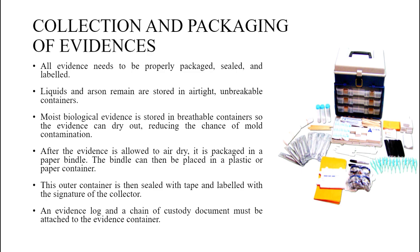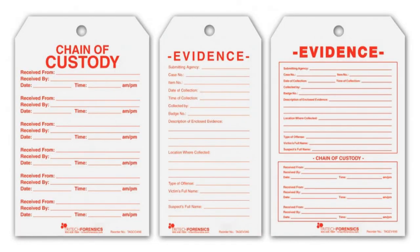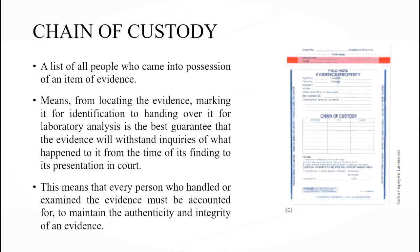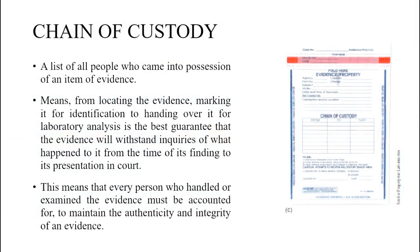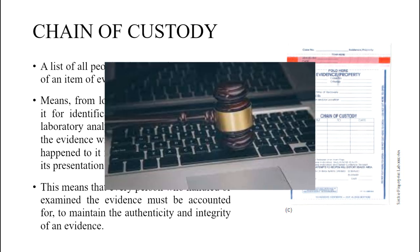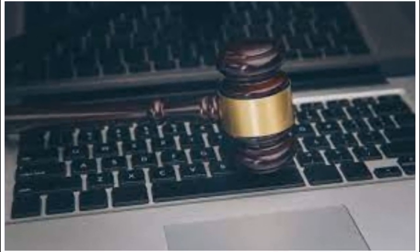An evidence log and chain of custody document must be attached to the evidence container. Chain of custody is one of the most important factors after collecting and packaging evidence. The chain of custody is a list of all people who came into possession of an item of evidence — from locating and marking it to handing it over for laboratory analysis. Every person who handled or examined the evidence must be accounted for to maintain the authenticity and integrity of the evidence.